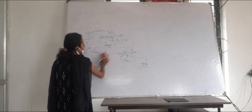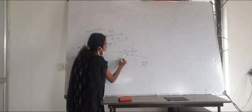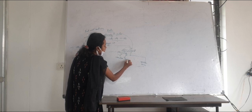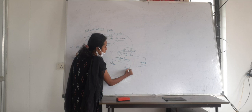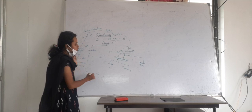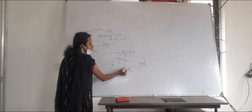Coming to geometrical isomers, the main condition to exhibit geometrical isomerism is that the molecule should have a carbon-carbon double bond. Geometrical isomers are divided into two types: cis isomers and trans isomers. In cis isomers, the same bulkier groups are present on the same side of the double bond, whereas in trans isomers, the bulkier groups are present on the opposite side.